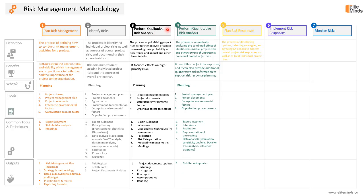Once we are done with risk analysis — both qualitative and quantitative — we will start planning for risk responses. It is the process of developing options, selecting strategies, and agreeing on actions to address overall project risk exposure as well as to treat individual project risks. This is the most important process as part of the planning phase for risk management. In this process, we develop appropriate actions to deal with identified and analyzed project risks. It identifies ways to address overall project risk and individual risks, allocates resources, and inserts activities into the project as needed — minimizing threats and maximizing opportunities.